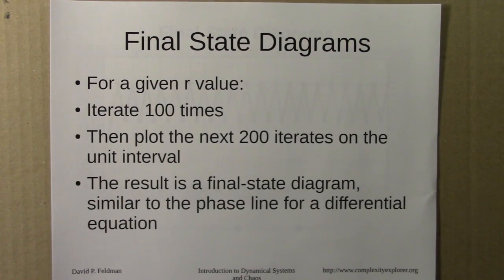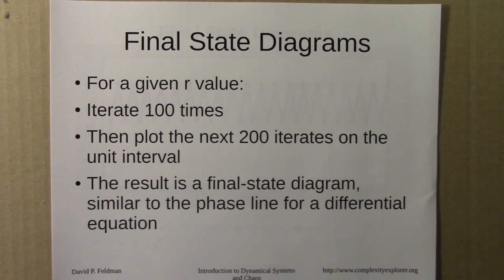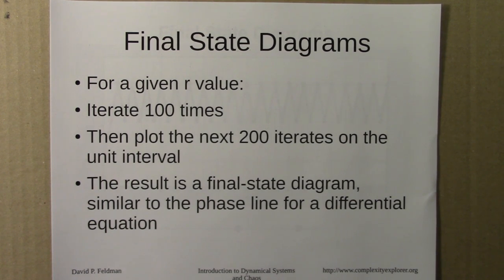I began by reminding us of the idea of final state diagrams. For the logistic equation, for a given R value, you make a final state diagram by iterating the function 100 times, then iterating another 200 times and plotting those iterates on a unit interval. This is very similar to the phase line for a differential equation — it shows the equilibrium or long-term behavior, but doesn't show arrows of direction, because the orbit can bounce around and doesn't move smoothly through all continuous values.